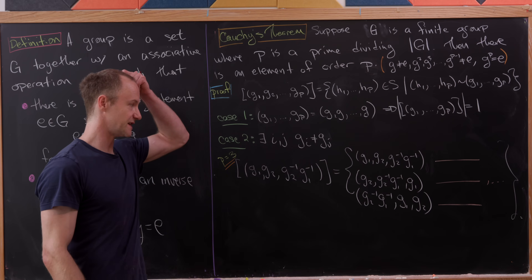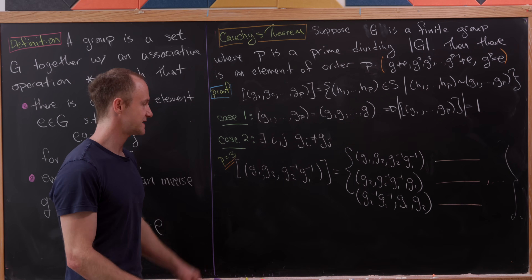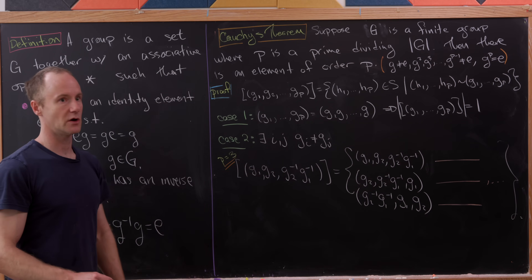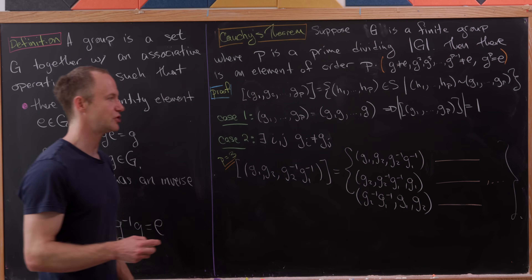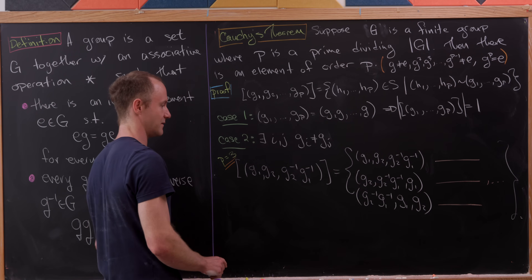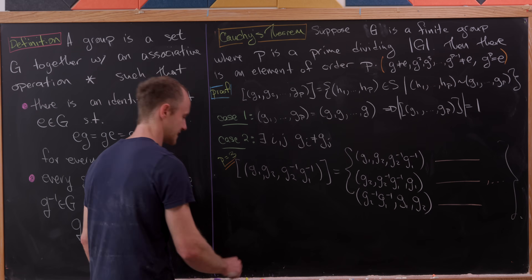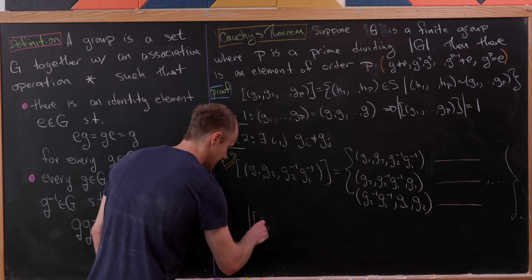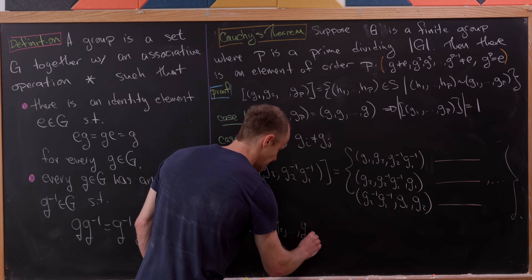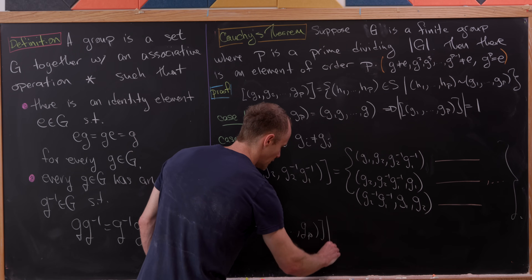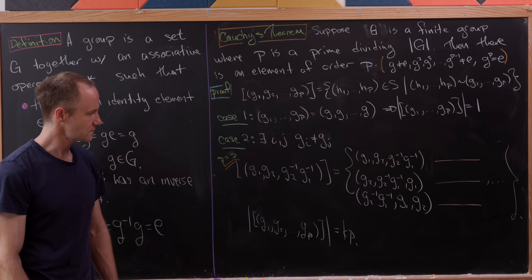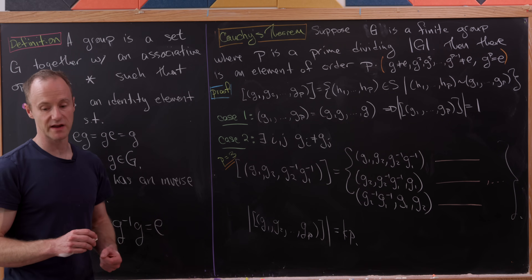The important point is that equivalence classes with non-equal entries come in groupings that are multiples of the prime P. So the number of elements in such an equivalence class is always some K times P — a multiple of P.